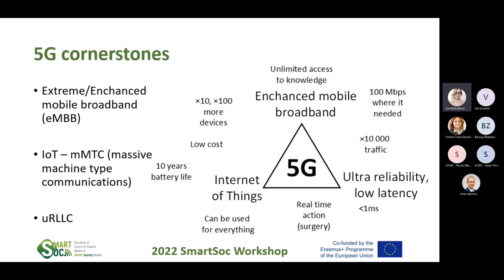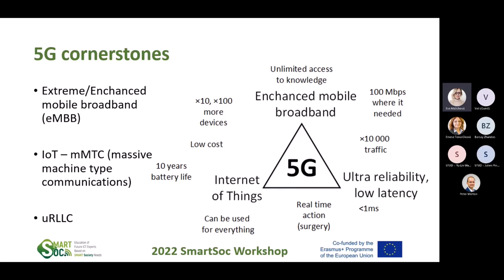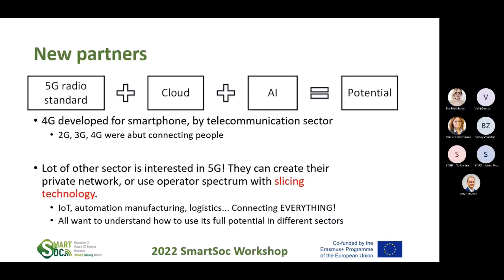With new partners joining into the radio standards, we can create higher potential. By employing cloud artificial intelligence, we can deploy a lot of tasks on this new network. A lot of other sectors are interested in 5G. They can create their own private network or use operator slicing technology. If I only want to use the Internet of Things or only the eMBB, this means some kind of slicing. The fifth generation means rapid development of industrial applications.